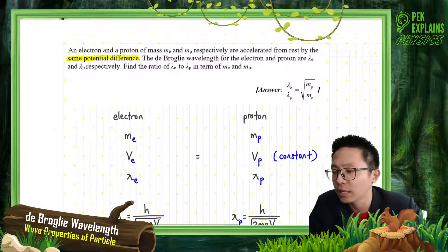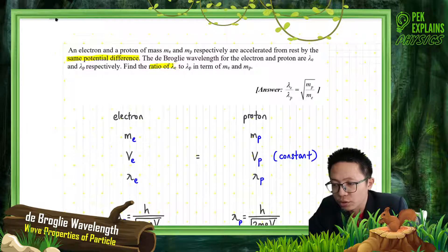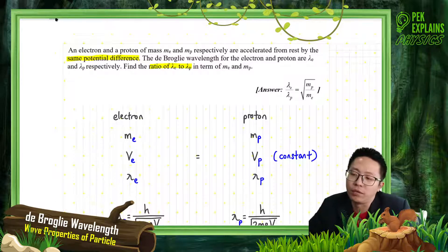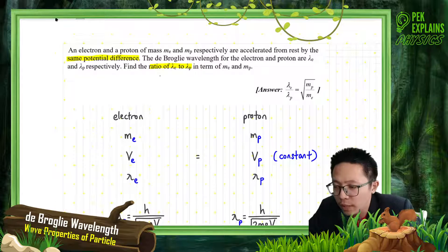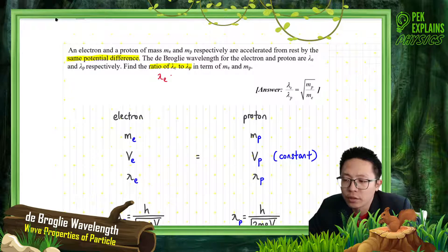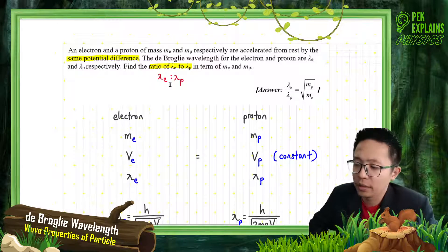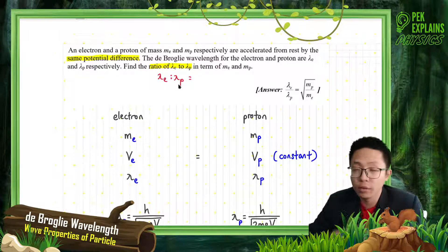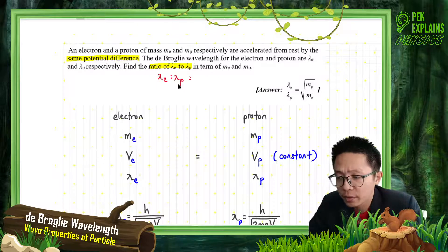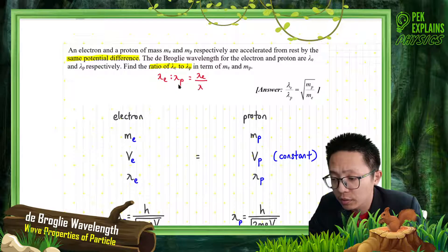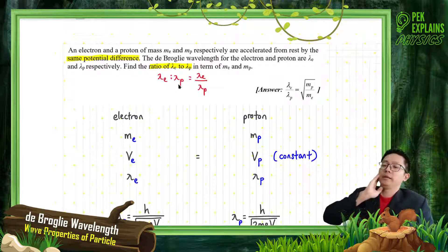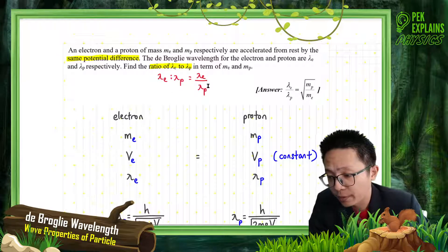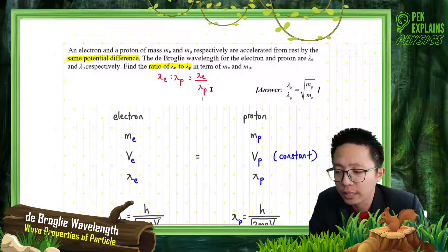The question asks for the ratio of electron to proton, which means we want to find the ratio of electron to proton. If this ratio can be put into fraction form, we normally put it in fraction form — so electron E first, then proton P. We need to find this fraction of lambda electron over lambda proton.